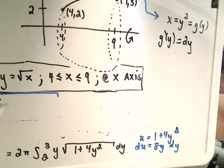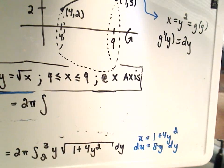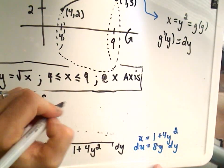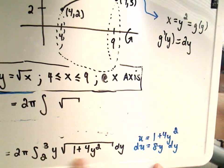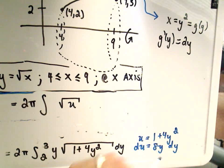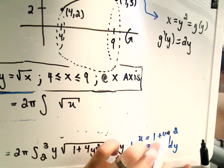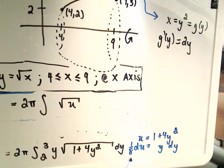Our du will turn into 8y dy. Okay, so when we go to replace our integral, we've got 2 pi, the integral. Let's see, underneath the square root, that's what we're calling u. So my du, I can divide both sides, or excuse me, multiply both sides by 1 eighth. So I'll get 1 eighth du is equivalent to y dy.